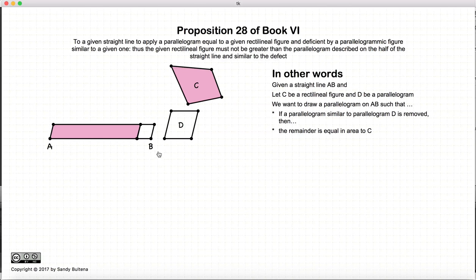So let's take that again. We have AB, we draw a parallelogram on it, we remove a portion of it that is equal to a parallelogram that is equivalent to D, and the remaining area is equal to the area of C. So this is what we want to do.